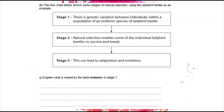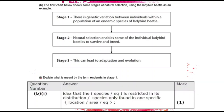The flowchart shows stages of natural selection using the ladybird beetle. Stage one: there is genetic variation between individuals within a population of an endemic species. The question asks what is meant by 'endemic.' Endemic means the species is restricted to, or only found in, one specific geographical location or area. If you say 'habitat,' you do not get the mark, because the same habitat type could exist in many places across the world.